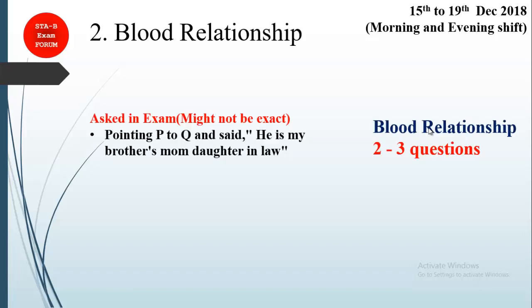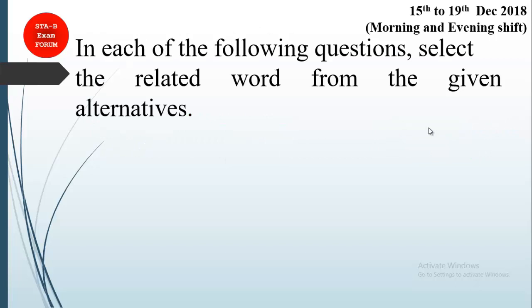Moving to the next question — this is from blood relationship. There were two to three questions asked on blood relationship. One question we received from our students: P points to Q and says, 'He is my brother's mom's daughter-in-law.' This might not be the exact wording, but it gives you a feel of what they are asking. You can prepare two to three questions from the blood relationship topic.